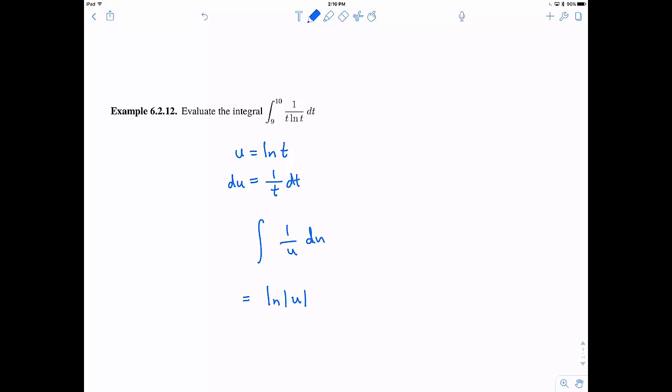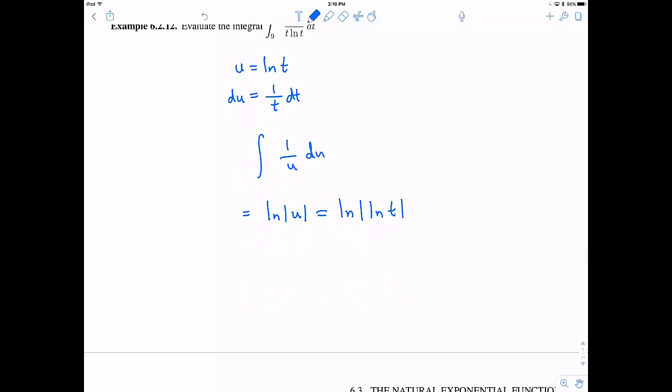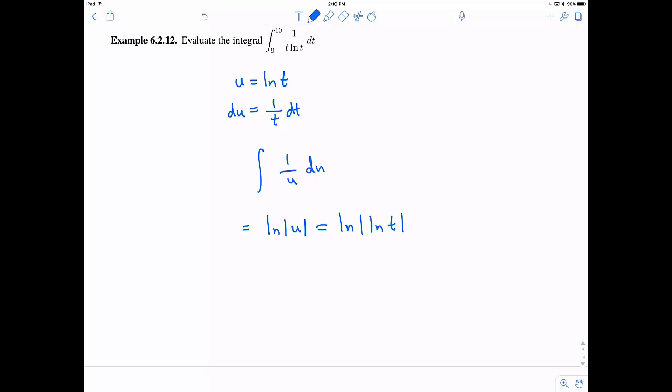So when I integrate that, I have the natural log of the absolute value of u, which if I substitute back, this is going to be the natural log of the natural log of t. And now remember, this is a definite integral. So I'm evaluating from 9 to 10. So this is going to be the natural log of the absolute value of the natural log of t evaluated from 9 to 10. So let me go ahead and plug in these things. First, I plug in 10, and then I would subtract away and I will plug in 9.